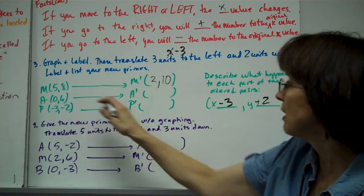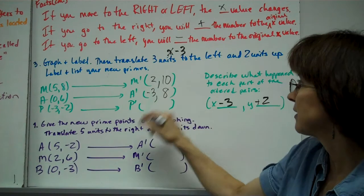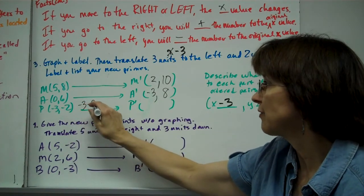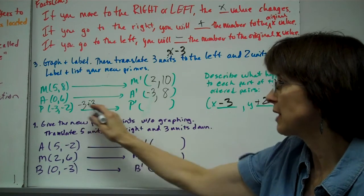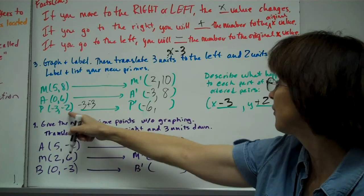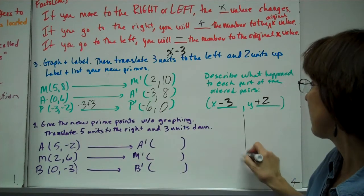A prime is going to be 0-3=-3, and 6+2=8. P prime is -3-3, add the opposite, like signs add and keep the sign. And then -2+2 is simply 0.